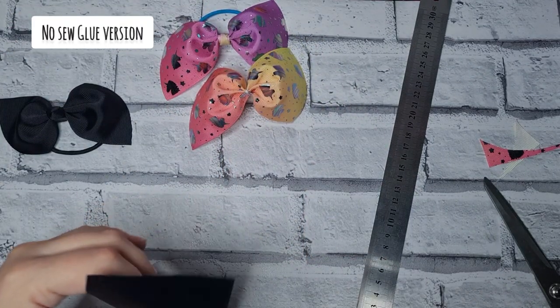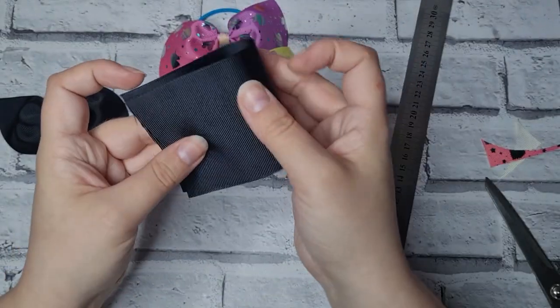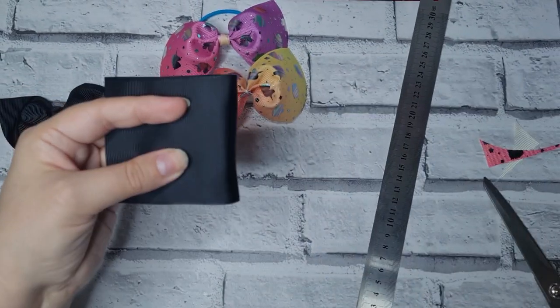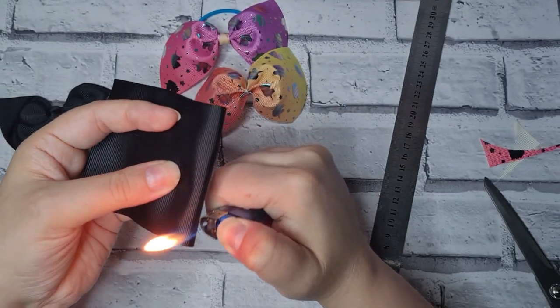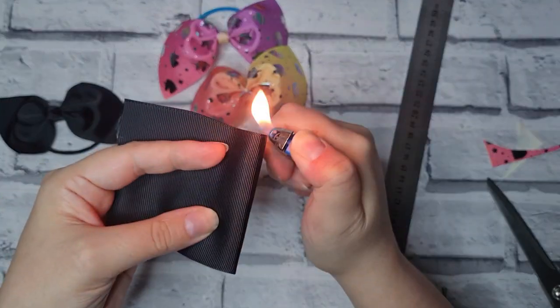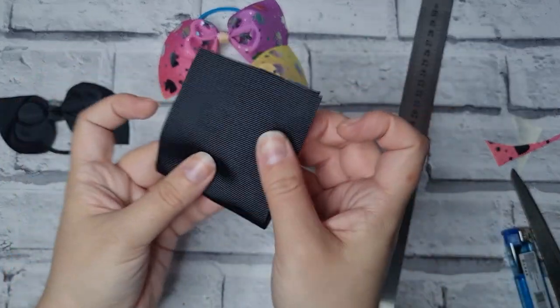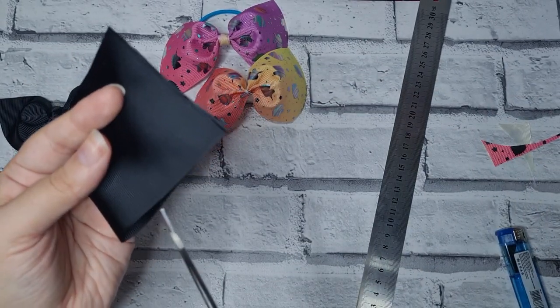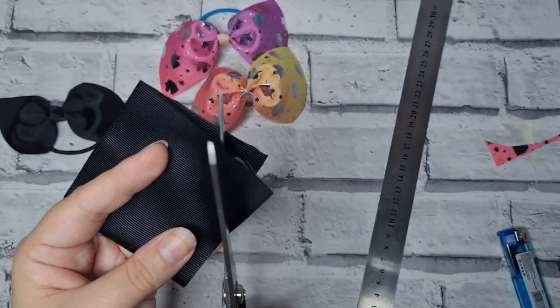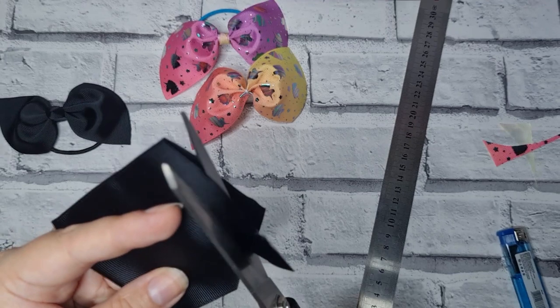I'm just going to do the no-sew version with the black just so you can see. Again, six and a half inches. Fold it in half, heat crease your center so you've got a pinch guide this time rather than a stitch line.